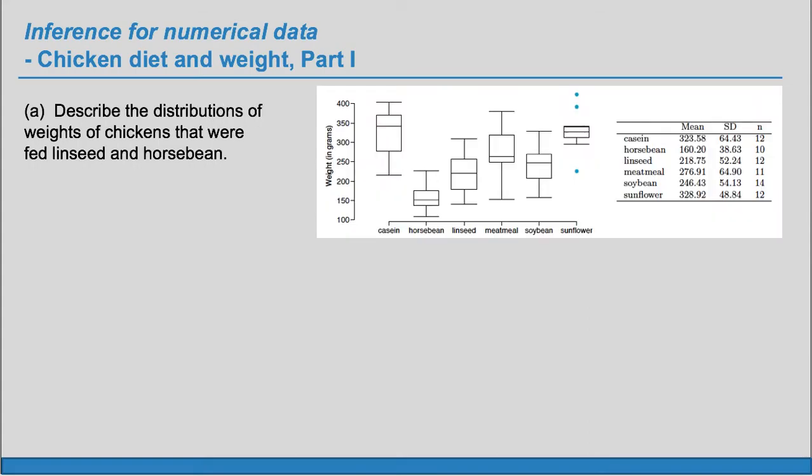Part A: Describe the distributions of weights of chickens that were fed linseed and horse bean. So we are going to concentrate just on these two. When we describe the distributions we always want to do so with respect to center, spread, and shape in context. We can say that the median weight of those fed linseed is higher or greater than those fed horse bean.